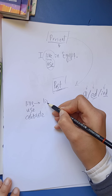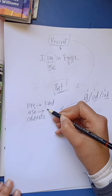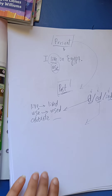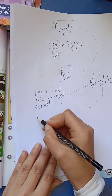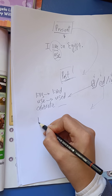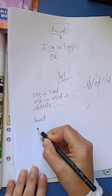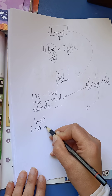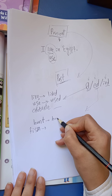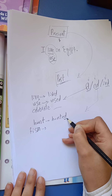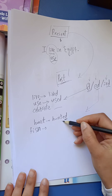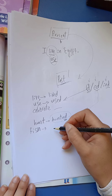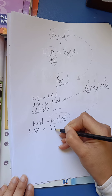So if the verb ends with E, I just add D to make it past. Like this: 'live' will be 'lived,' 'use' will be 'used.' For ED, I add ED when the verb ends with a consonant letter — like hunt or fish. 'Hunt' will be 'hunted,' because someone hunted and it's over. 'Fish' will be 'fished.'